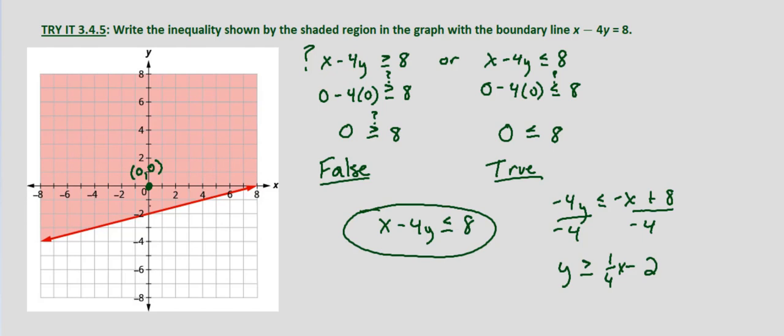For every 1 we go up, we go 4 to the right—rise over run. But we weren't asked to find that, so we could stop with x minus 4y is less than or equal to 8. It's just important that we know how to put this into slope-intercept form in case the choices given are in that form.